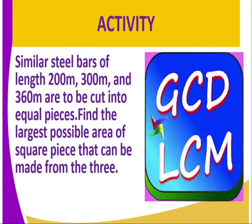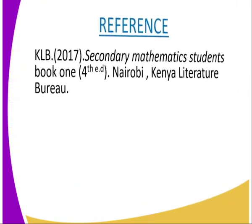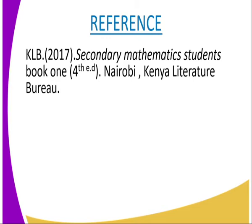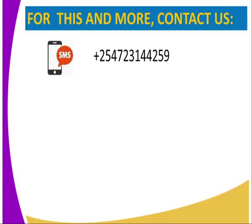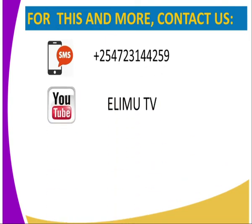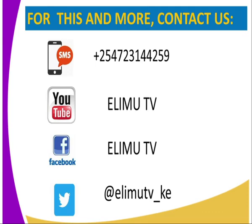We are going to have the following activity: similar steel bars of length 200 meters, 300 meters and 360 meters are to be cut into equal pieces. Find the largest possible length of equal pieces that can be made. To get more of this lesson, you can refer to KLB Secondary Mathematics Student Book One, fourth edition, Kenya Literature Bureau. You can also reach us by sending an SMS through the number on our screen, subscribing to our YouTube channel Elimu TV, our Facebook page Elimu TV, or tweet us at Elimu TV underscore Kenya. Thank you.